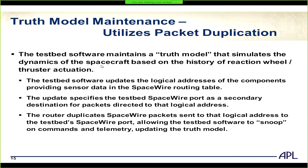Truth model maintenance utilizes packet duplication. The test bed maintains a truth model simulating spacecraft dynamics and needs to observe reaction wheel and thruster actuations from the guidance and control system. The test bed updates the logical address routing table to specify itself as a secondary destination for relevant packets. Anything going to or from those components gets duplicated to the test bed, allowing it to snoop and maintain its truth model in a benign manner without directly intervening.